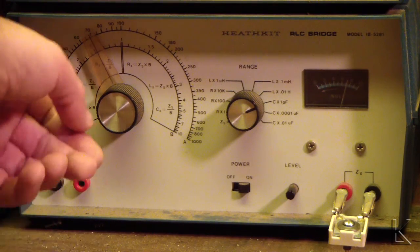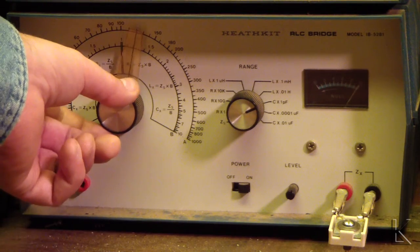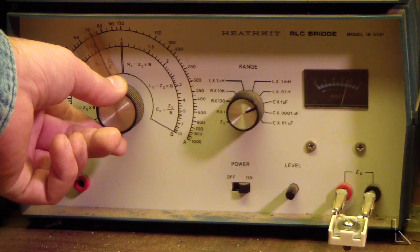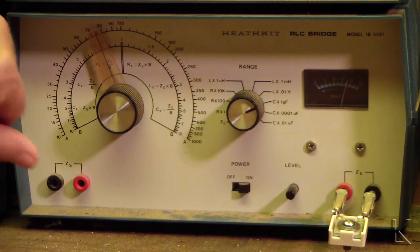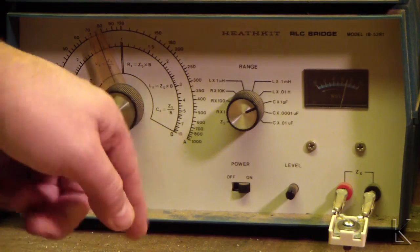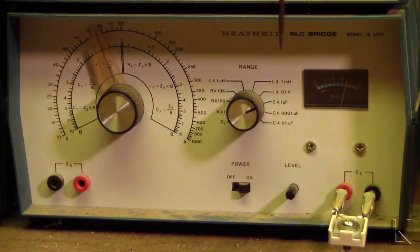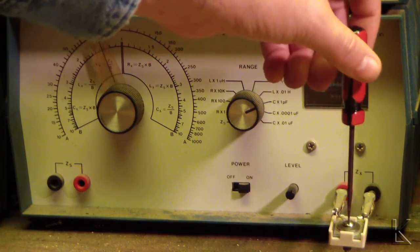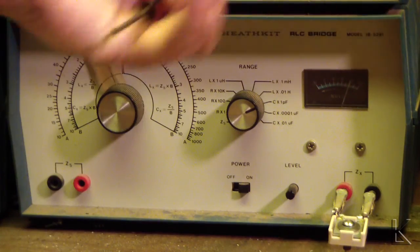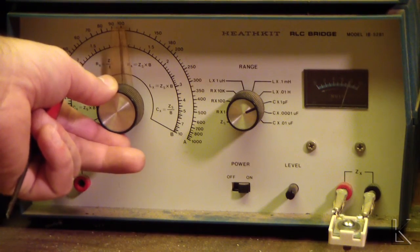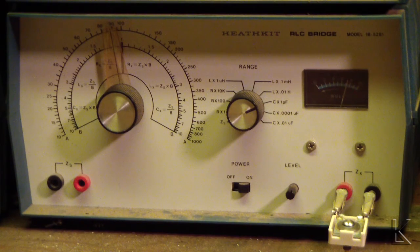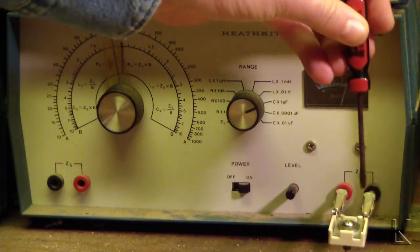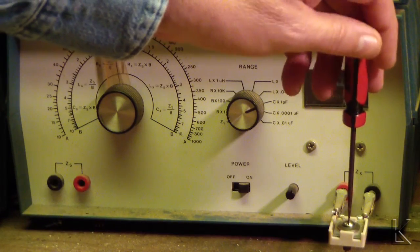I've got it on capacitance times one picofarad, which is the outer scale on the dial. If I tune this you'll see the meter go up - what you're looking for is that dip. That dip is resonance. Right about there is resonant, and that would be 75 picofarads. So now I've brought the low end of the range down to 75 picofarads. I'll turn the trimmer in half a turn - the meter went up. Now we'll tune for the dip again, and right about there - that is 90 picofarads.